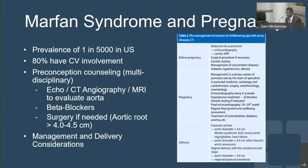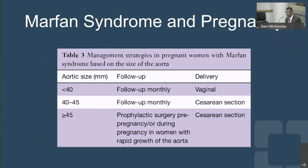We can also discuss management and delivery considerations. During pregnancy, the aortic root is followed at least monthly. If the root is not enlarged — less than 40 millimeters in diameter — we follow monthly and may allow vaginal delivery.